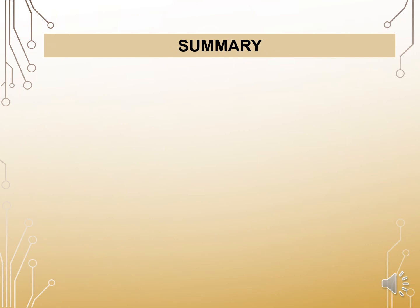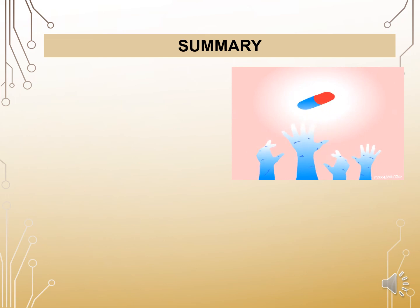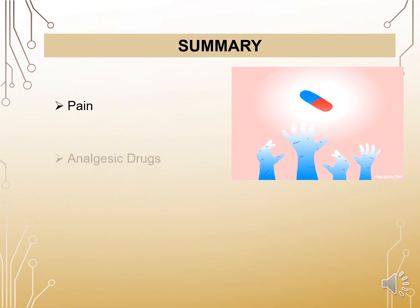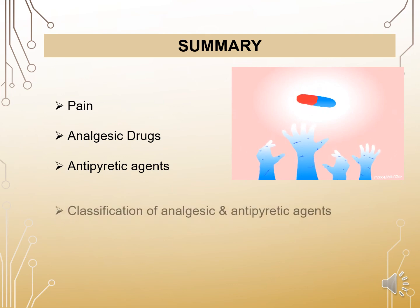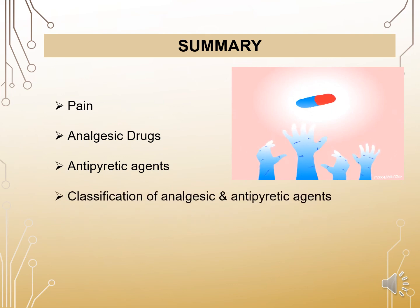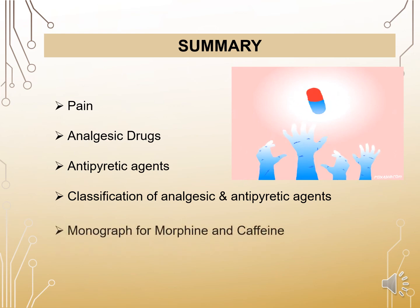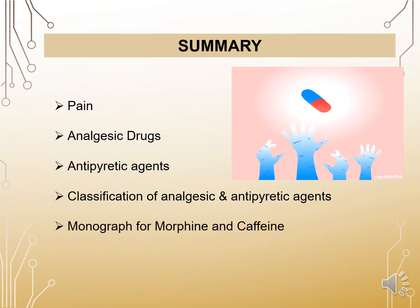In summary, in this session we learned about what is pain, what are analgesic drugs, what are antipyretic drugs, how to classify analgesic and antipyretic agents, and detailed monographs about morphine and codeine.